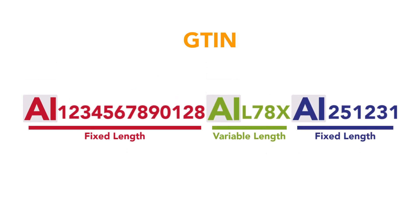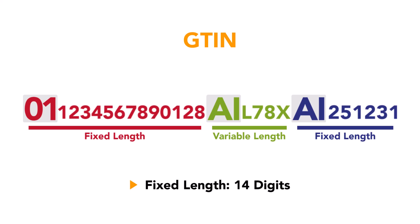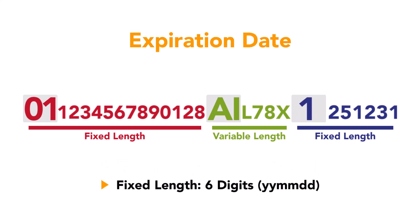According to the specification, GTIN (AI-01) and expiration date (AI-15) are always encoded with a fixed number of characters.